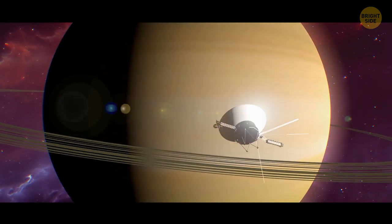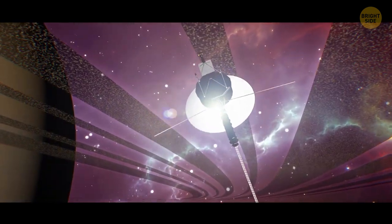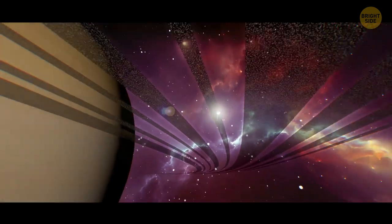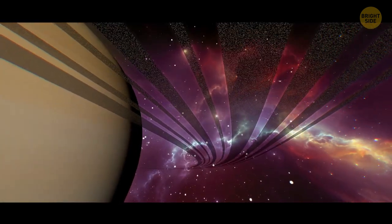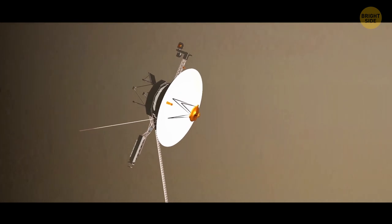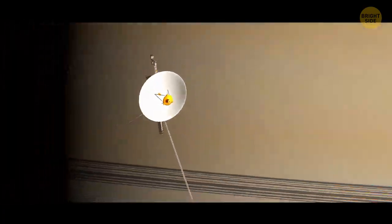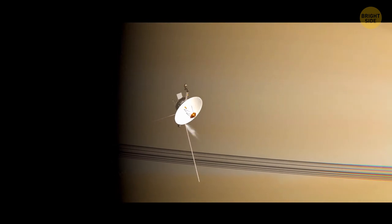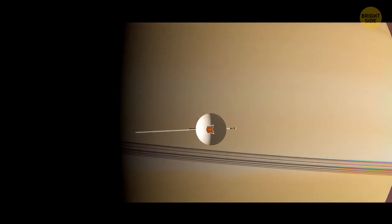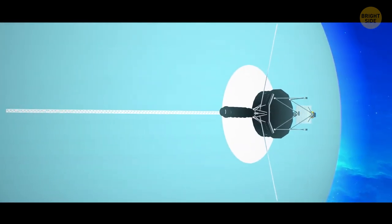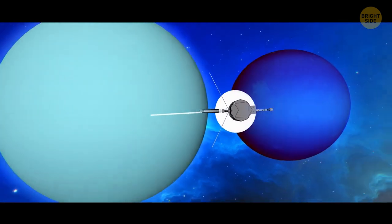Two years later, Voyager 2 reached Saturn. It discovered spokes and kinks in some of the planet's rings. While the spacecraft was flying behind and up past the gas giant, it passed through the plane of Saturn's rings. At that time, Voyager's speed was around 8 miles per second. For several minutes, the probe was hit by thousands of micron-sized grains of dust. This kept shifting the probe's direction, and its control jets had to fire many times to stabilize the vehicle.